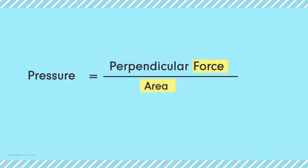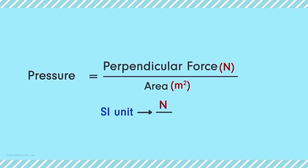We already know that the SI unit of force is Newton, denoted by N, and the unit of area is meter squared. So the SI unit of pressure is Newton per meter squared, which is also called Pascal, denoted by Pa.